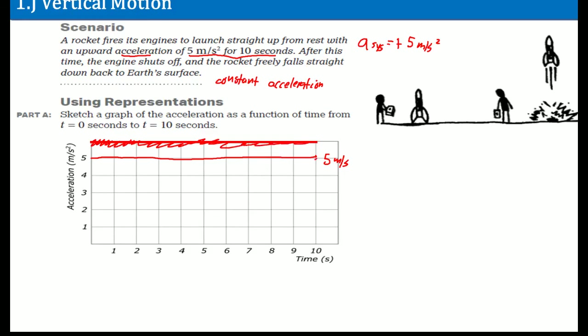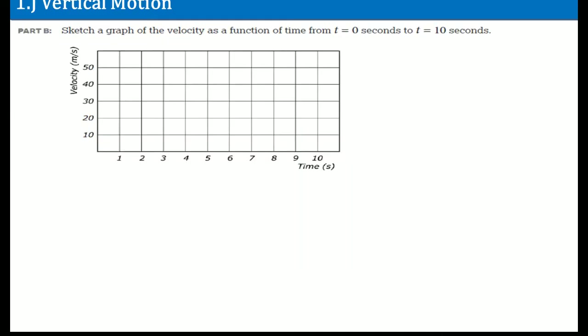Please understand that the line stops at t equals 10 seconds. It's not an arrow — if you draw an arrow, that means it goes on forever. So it stops here. This is its acceleration.